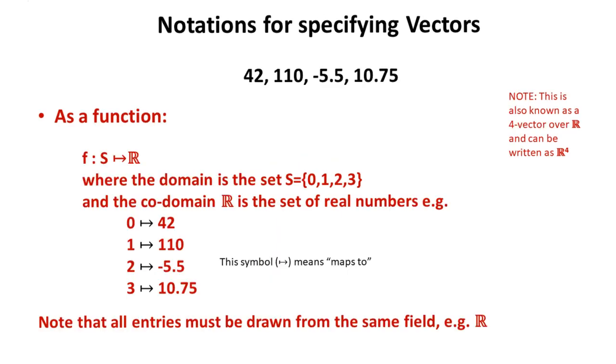And we could also store a vector as a function. And here's our example, where the domain is the set 0, 1, 2, and 3, and the co-domain R is the set of real numbers, e.g. 0 maps to the value 42, 1 maps to the value 110, etc.